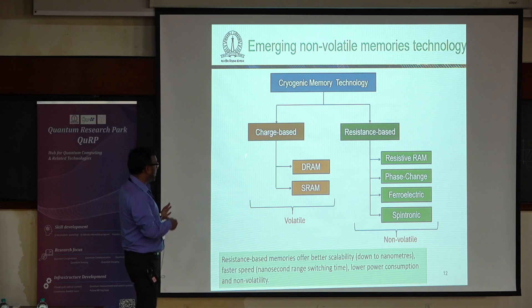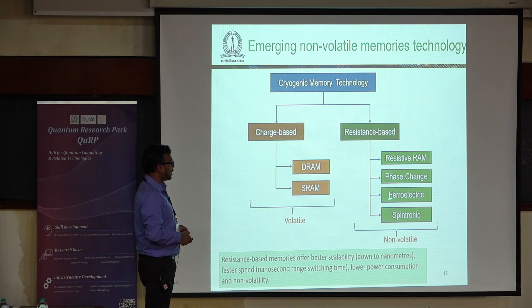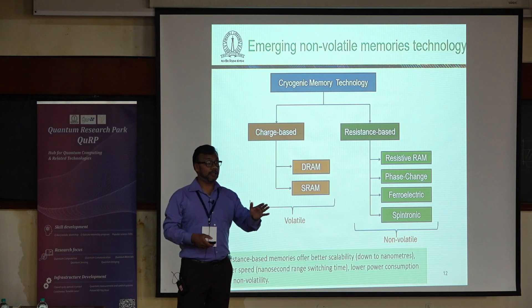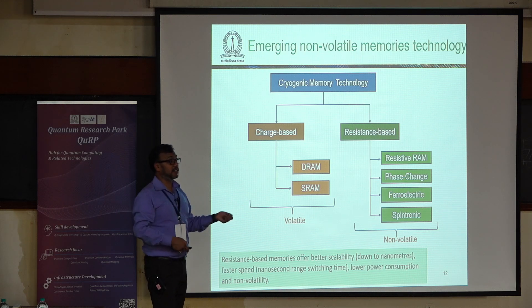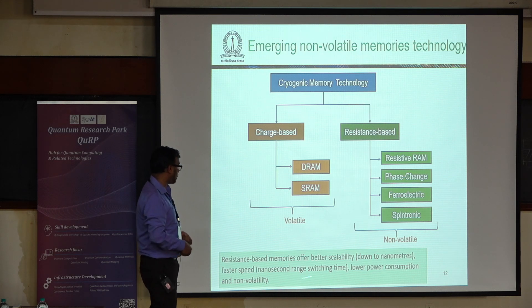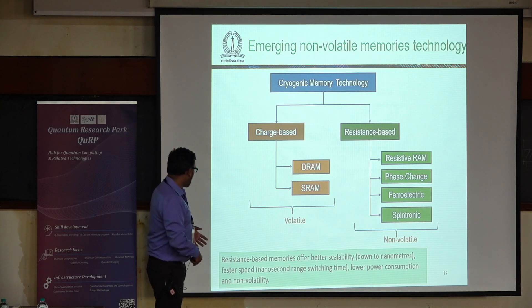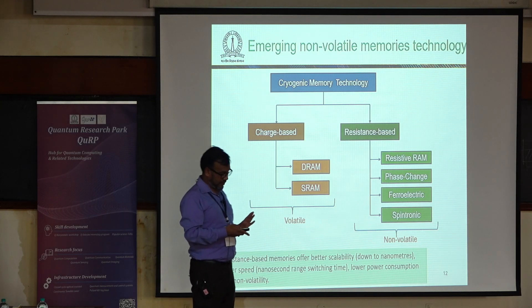For cryogenic memory, we want non-volatile memory, so we go to resistance-based technologies: resistive RAM, phase change, ferroelectric, and spintronics. The benefits of resistance-based technology include better scalability to nanometer sizes, faster switching comparable to processors at nanoseconds, very low power in the femtojoule to attojoule per bit range, and non-volatile retention — information is preserved when power is off.